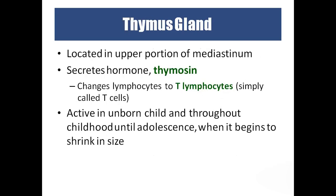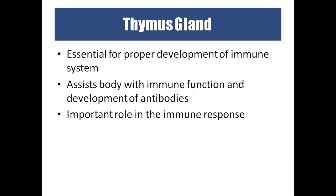The thymus gland is present near the front of the heart in the mediastinal region and secretes a hormone called thymosin. Thymosin is responsible for activating T lymphocytes. It is very active in the unborn child and throughout childhood and adolescence — from age 12 to 18 years, the thymus gland shrinks in size. It is very important for the proper development of T lymphocytes, which are responsible for cell-mediated immunity and immunity in the tissues.